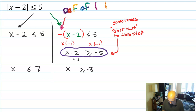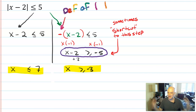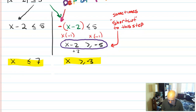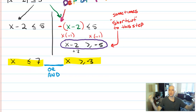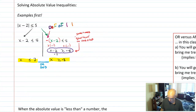We have two solutions now, but it's different from equations. When it was equations, I'd say x equals 7 and x equals negative 3, and be done. But we're missing a key word in between these answers. That key word is either 'or' or 'and.' A lot of people use those two interchangeably as a connecting word between answers, but that's actually wrong.